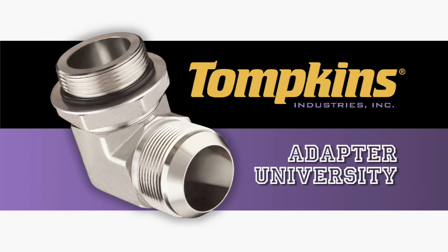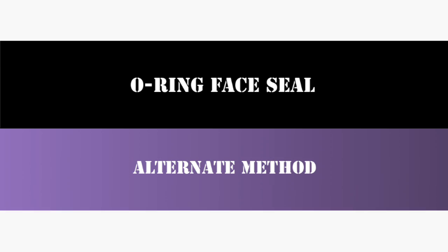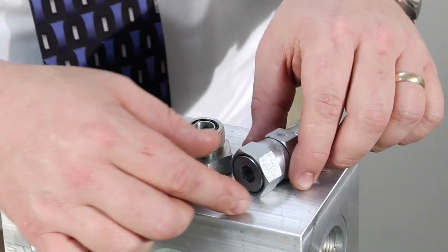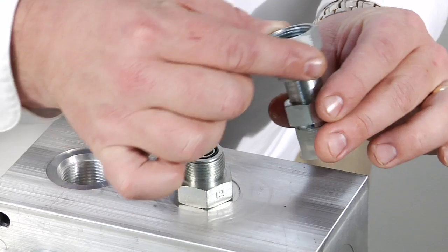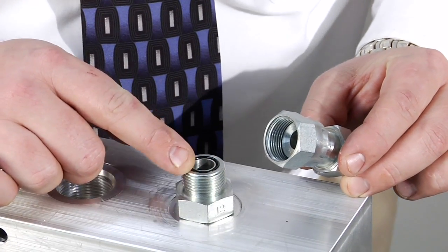This reference video will demonstrate assembly instructions for steel O-ring face seal adapters using the flats from wrench resistance method. Inspect for contamination or damage. Confirm that the face seal O-ring is properly installed.